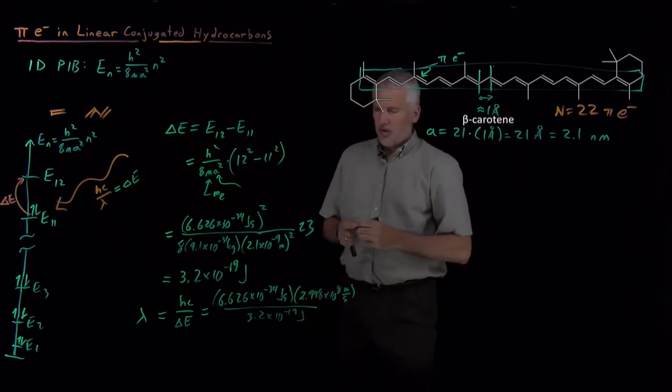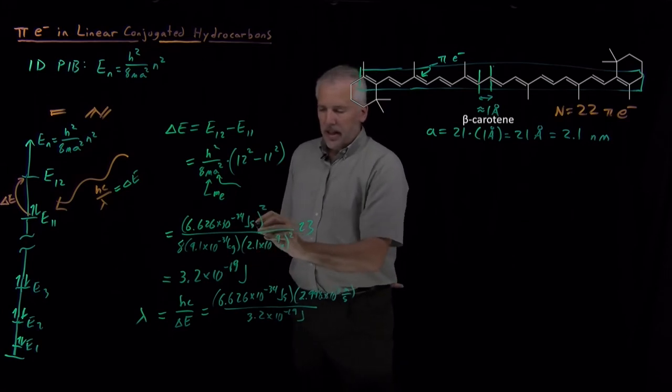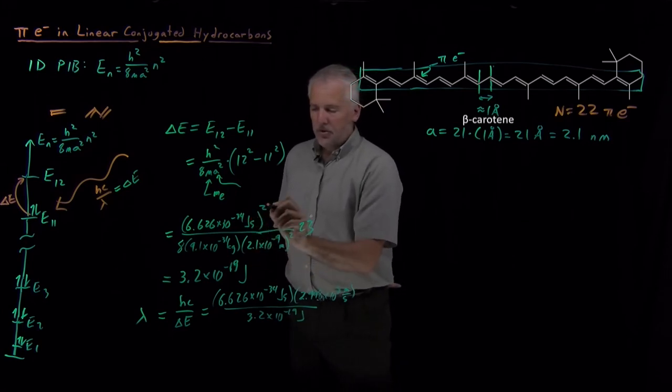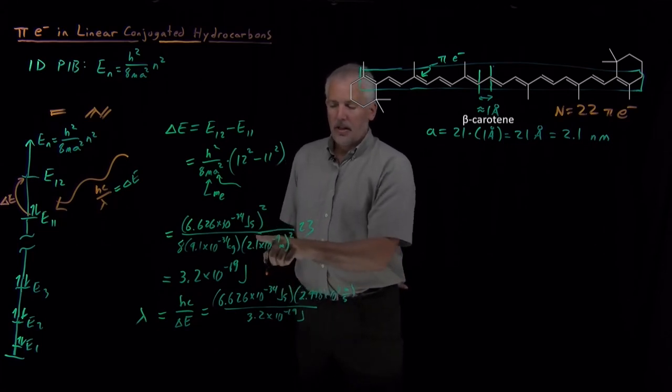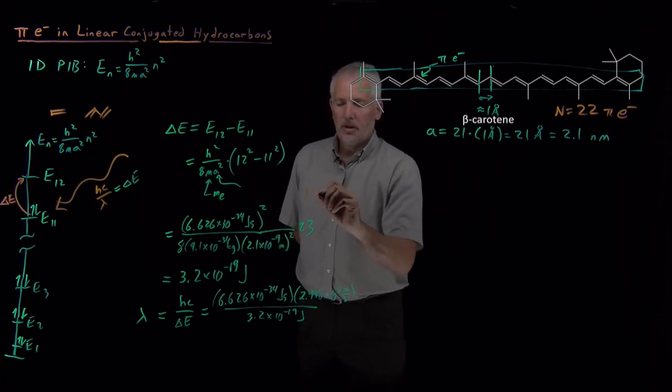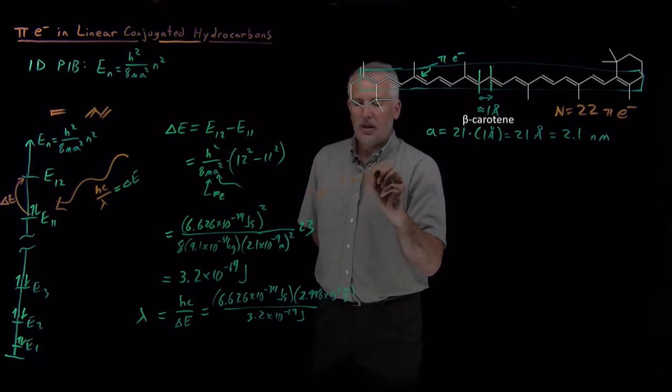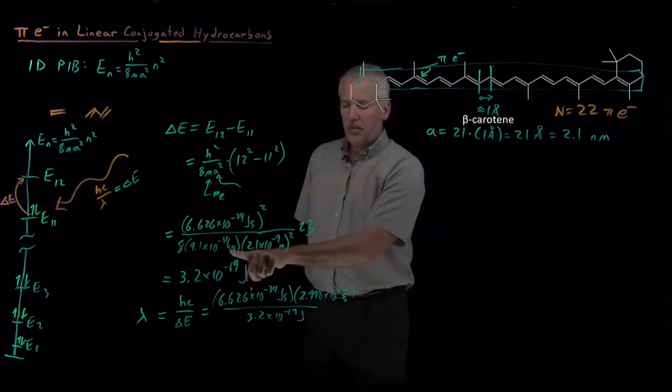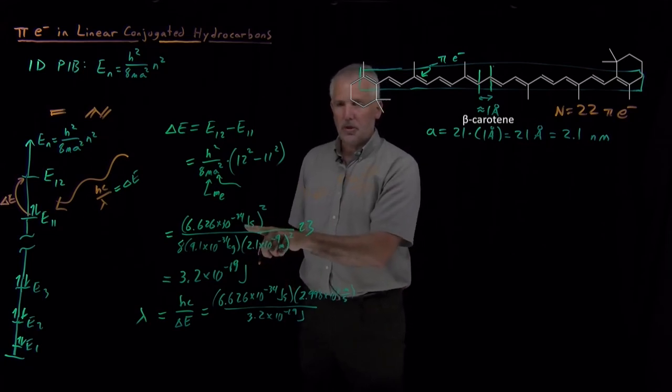I suppose it's worth a second to talk about units. In this first calculation, I had joules squared. So one of those joules turns into the joule that we have for our answer. The units that remain behind, there was a kilogram meter squared in the denominator, second squared in the numerator. That kilogram meter squared under second squared, one joule is a kilogram meters squared per second squared. So that composite turns into a joule in the denominator, which cancels one of the joules in the numerator.